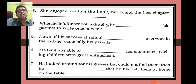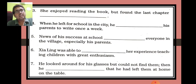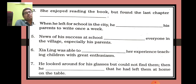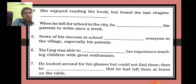Fifth sentence: News of his success at school elated everyone in the village, especially his parents. Elated means becoming very excited or happy. Sixth sentence: Childing was able to recount her experience teaching children with great enthusiasm. Recount means to recall or narrate. So the sixth answer will be 'recount.'